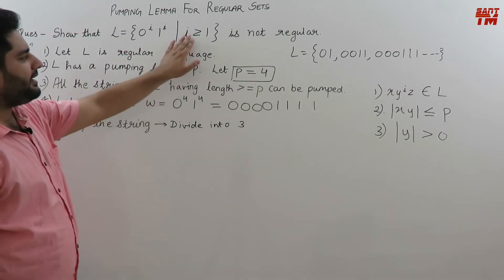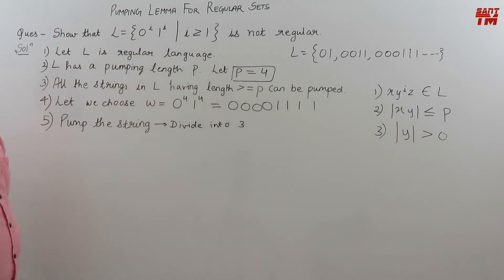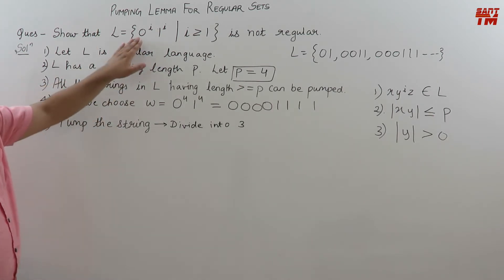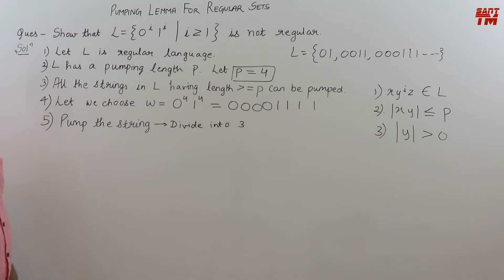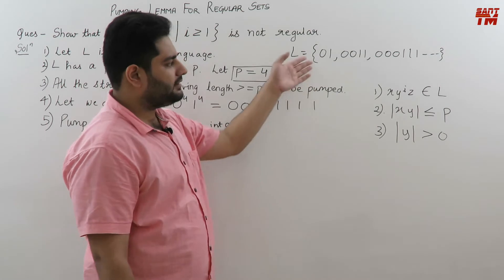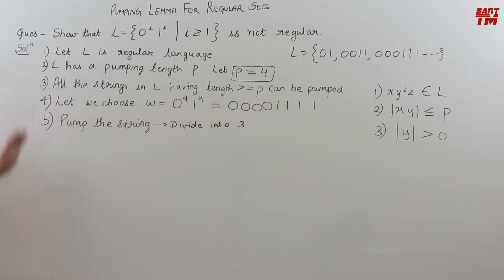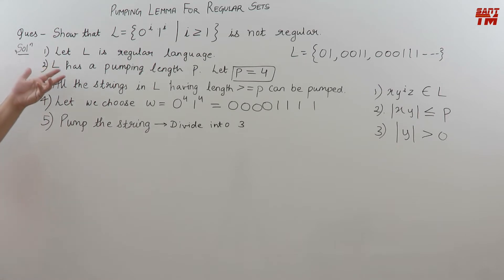So if i equals 1, the string will become 0, 1. If i equals 2, the string will become 0, 0, 1, 1. If i equals 3, the string will become triple 0, triple 1, something of this kind, and the number of strings will continue to infinity. So the first step, if we have to prove the language to be not regular using pumping lemma, is we will assume that the language is regular and later on get a contradiction.